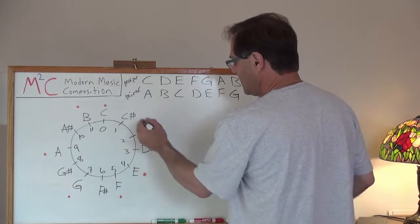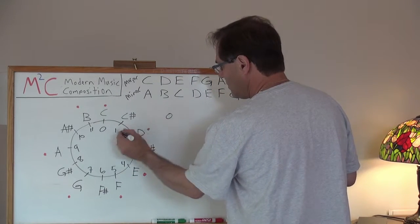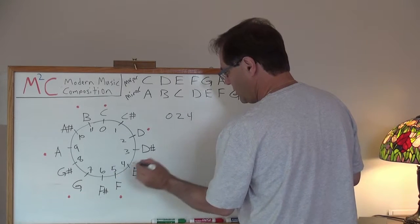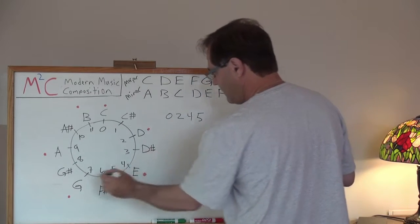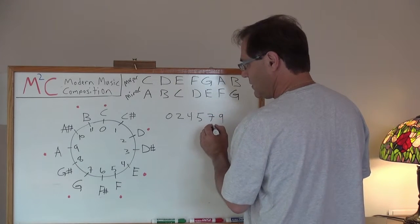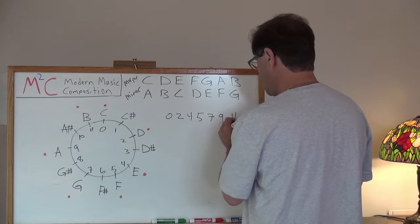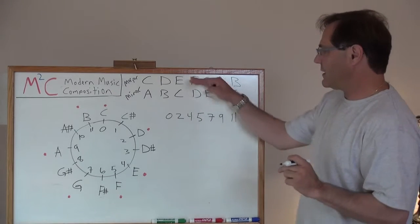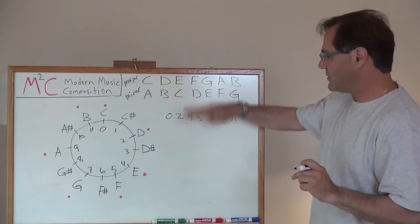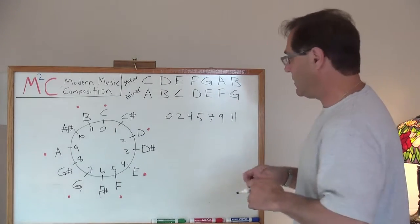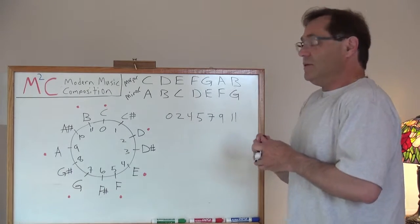So I see here, let's start with C. We've got 0, 2, 4, 5, 7, 9, and 11. 1, 2, 3, 4, 5, 6, 7. So now we've kind of converted these letters into numbers. It's just easier to do these calculations when you do that.